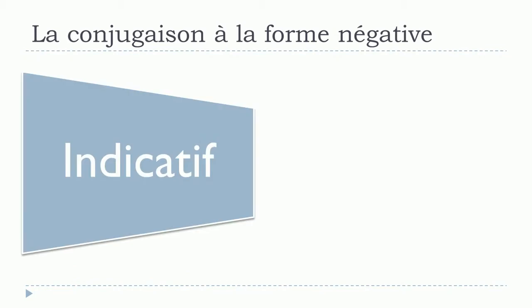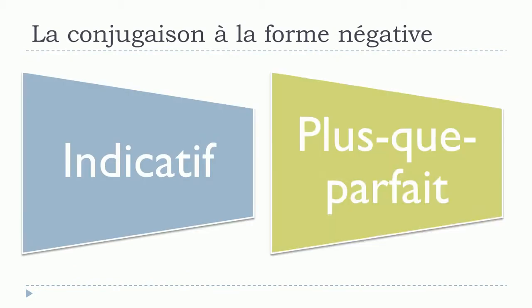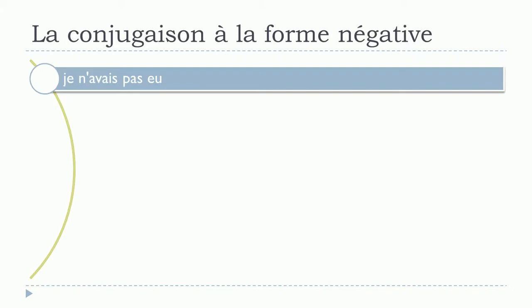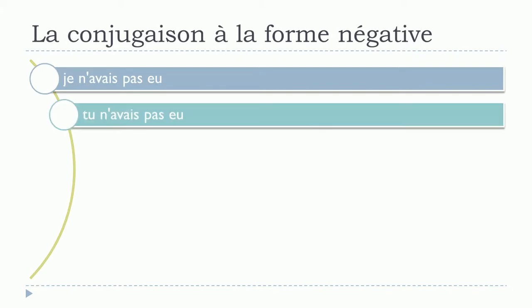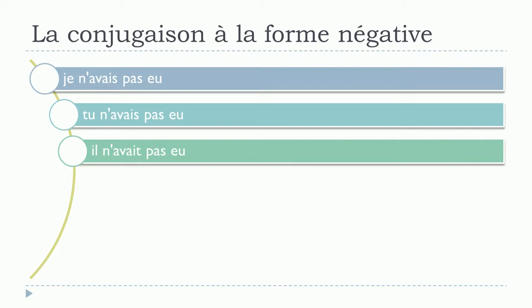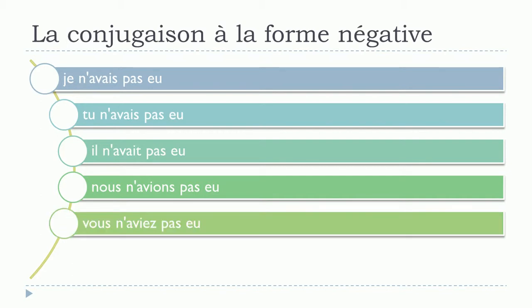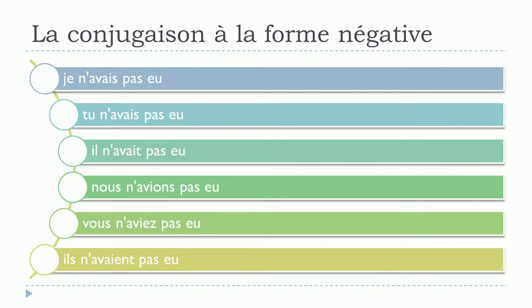And then indicatif plus-que-parfait. Je n'avais pas eu. Tu n'avais pas eu. Il n'avait pas eu. Nous n'avions pas eu. Vous n'aviez pas eu. Ils n'avaient pas eu.